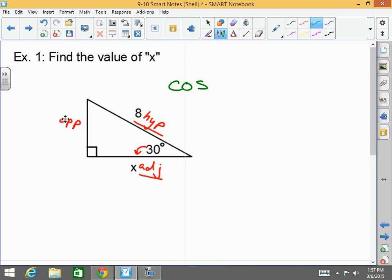So the cosine of 30 degrees equals the adjacent, which is X, over the hypotenuse, which is 8. Literally that easy. So now solve for X. Now it's just basic algebra. Multiply it to both sides. Calculator time. 8 times the cosine of 30.